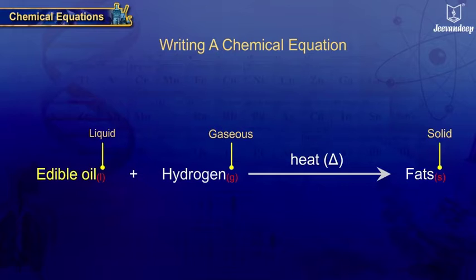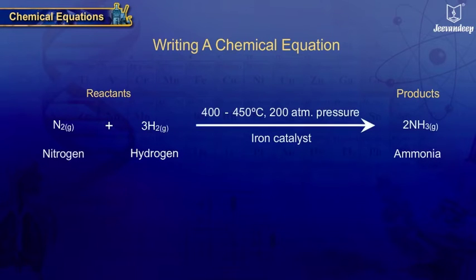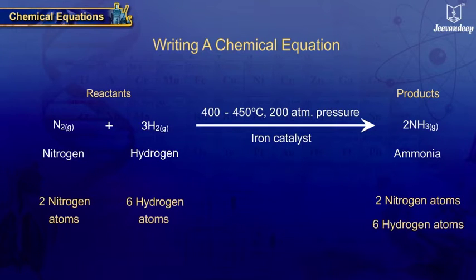For example: edible oil (l) plus hydrogen (g) gives fats (s). The chemical equation should be balanced, that is, the number of atoms should be same on left hand side and right hand side of the chemical equation.